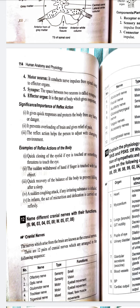Synapse - the space between two neurons. We can see this in myelinated sheet - the space between two neurons is called synapse. Effector organ - it is the part of body which gives response.